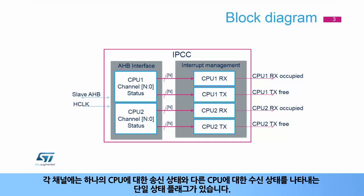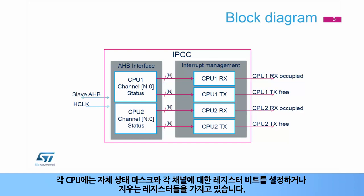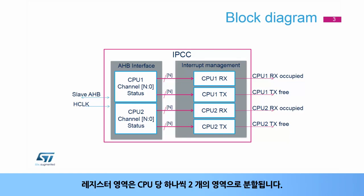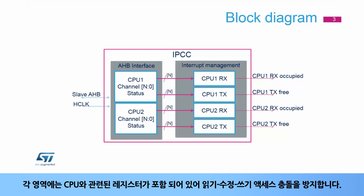Each channel has a single status flag to indicate the send status for one CPU and the receive status for the other CPU. Each CPU has its own status mask and set or clear register bit for each channel. The register area is split into two regions, one per CPU. Each region contains the registers associated with the CPU, preventing read-modify-write access conflicts.